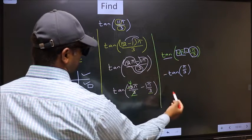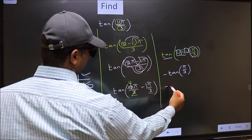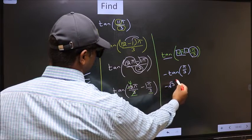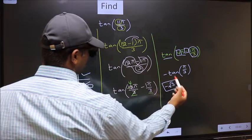So we should put negative. So negative tan π by 3 is root 3. This is our answer.